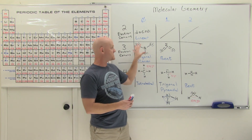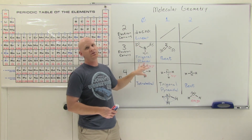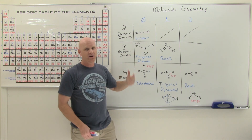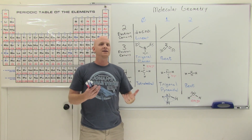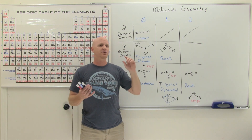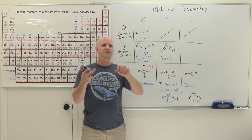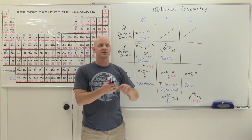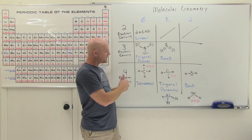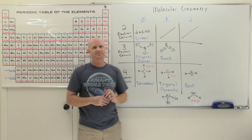Now we have a representative of every one of our molecular geometries. Given any particular Lewis structure, you should be able to determine its electron domain geometry, its molecular geometry, its bond angles, and so on.